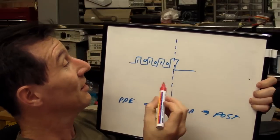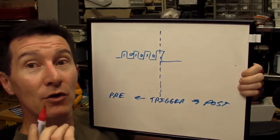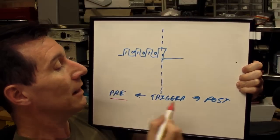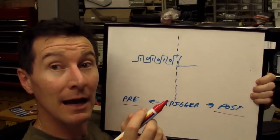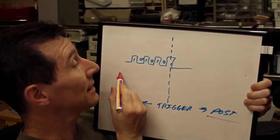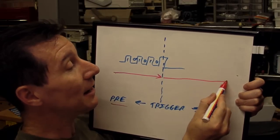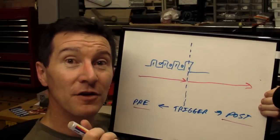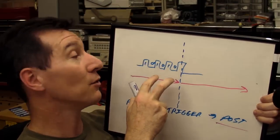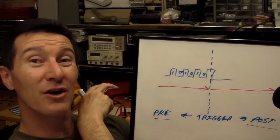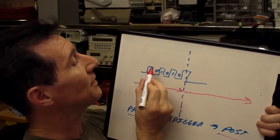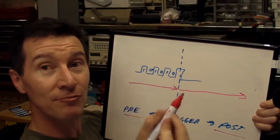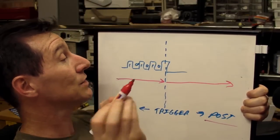Yet another thing to look for when buying a logic analyzer: make sure your logic analyzer supports pre and post triggering. It should capture data before the trigger point and after the trigger point — maybe selectable. Because often in a system, you're triggering on a fault and you want to see the data that caused that fault.